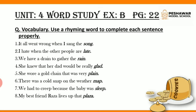Then Exercise B, vocabulary: use a rhyming word to complete each sentence properly. Rhyming words are those words which have similar sounds. For example: 'It all went wrong when I sang the song' — wrong and song are rhyming words. 'I hate when the other people are late.' 'We have a drain to gather the rain.' 'She knew that her dad would be really glad.' 'She wore a gold chain that was very plain.' 'There was a cold snap on the weather map.' 'We had to creep because the baby was asleep.' So these are the rhyming words.